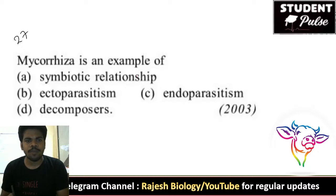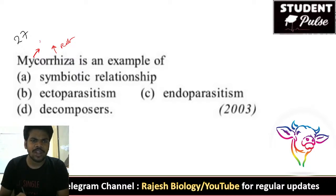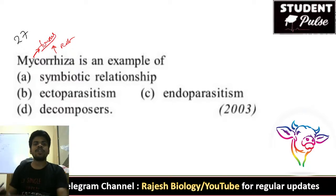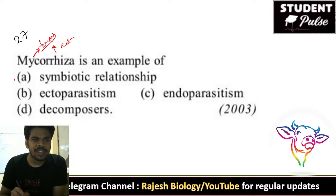Twenty-seventh question: mycorrhiza is an example of — rhiza means root, myco means fungus. Mycorrhiza, the name itself indicates it is a fungus present in the root, and that relationship is mutualism — a symbiotic relationship.